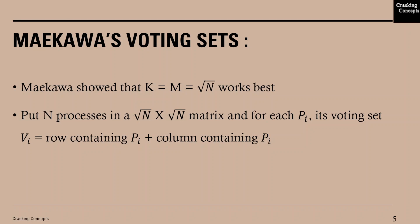Maekawa showed that k equals m equals root n works the best. One way of representing the voting set is by putting the n processes in a root-n by root-n matrix, and for each process Pi its voting set Vi is equal to the row containing Pi and the column containing Pi added together.